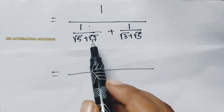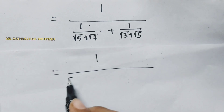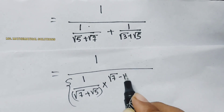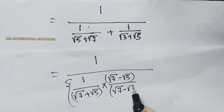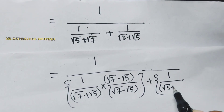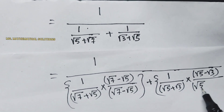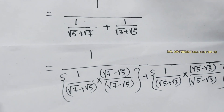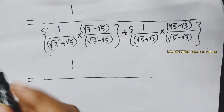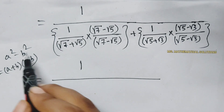Now we multiply the first fraction's numerator and denominator by root 7 minus root 5, giving 1 over root 7 plus root 5, times root 7 minus root 5, over root 7 minus root 5. For the second fraction we multiply numerator and denominator by root 5 minus root 3. This uses the formula a squared minus b squared equals a plus b times a minus b, where for the first term a equals root 7 and b equals root 5.